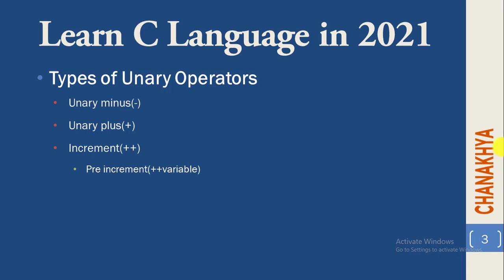The unary increment operator is used in two notations. One is called pre-increment notation, which means it will first increase the value by one and then assign the value — that is what is called pre-increment. Another way of using the increment operator is post-increment, in which we first assign the value of the variable and then make the increment.